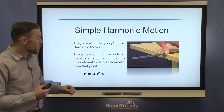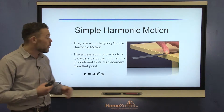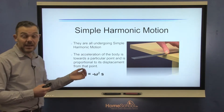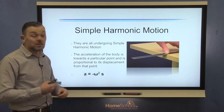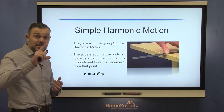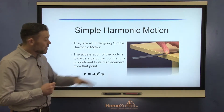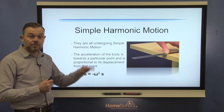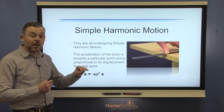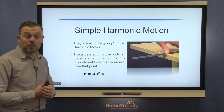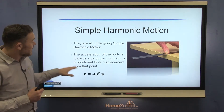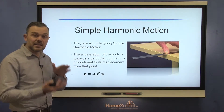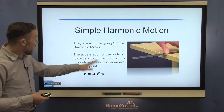So the acceleration of the body is towards a particular point — and that point is the equilibrium point — and is proportional to its displacement from that point. The displacement is basically the distance the object is moving from its equilibrium point, and that displacement gets less and less. The force and the displacement are proportional.